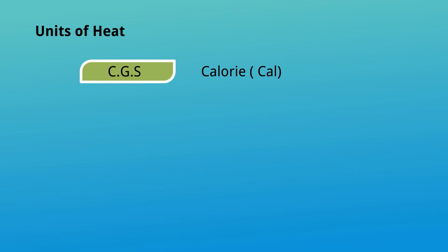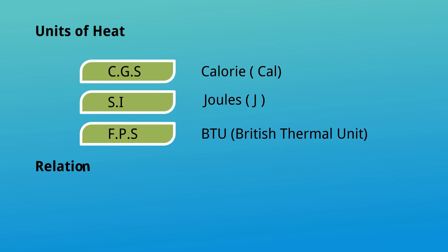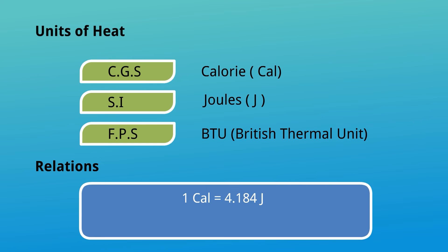Units of heat: in CGS, the unit of heat is calorie, represented as cal. In SI, it is joules, represented as J. In FPS, the unit of heat is BTU — British Thermal Unit. The relations between units: one calorie is equal to 4.184 joules or 4.2 joules. One BTU is equal to 1055 joules. These two relations can give other relations as well.